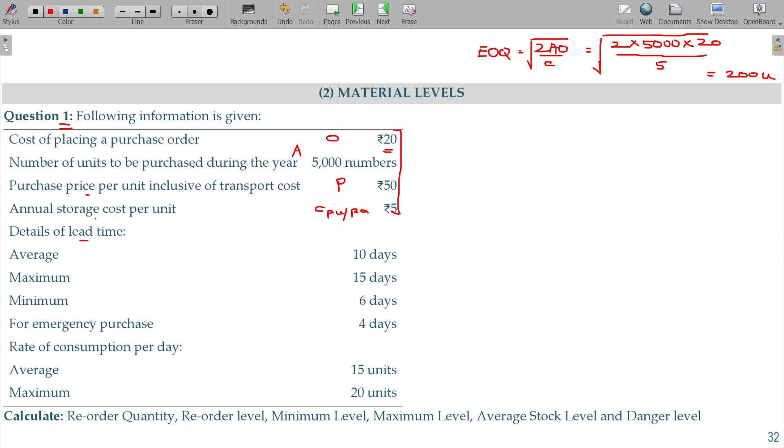Details of lead time: average, maximum, minimum - 10 days, 15 days, 6 days. Emergency purchase 4 days. And rate of consumption being average 15, maximum 20.